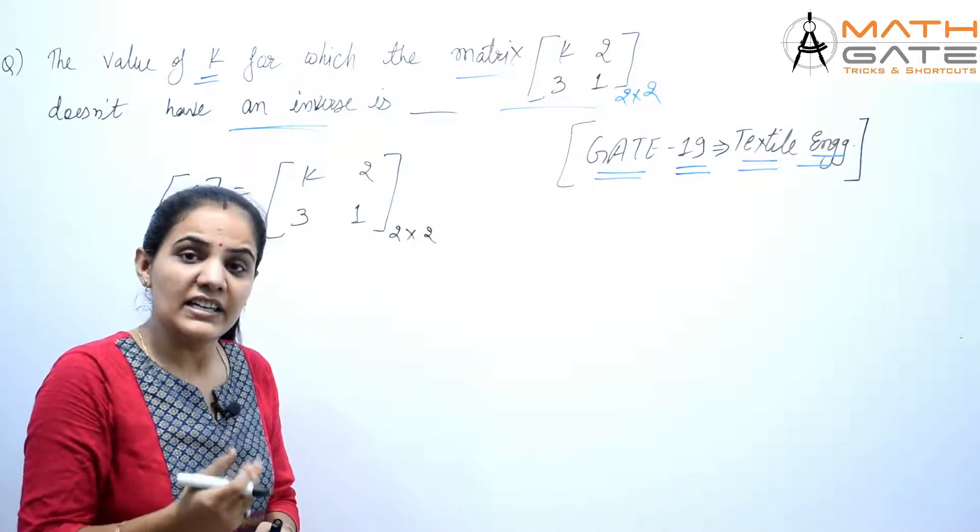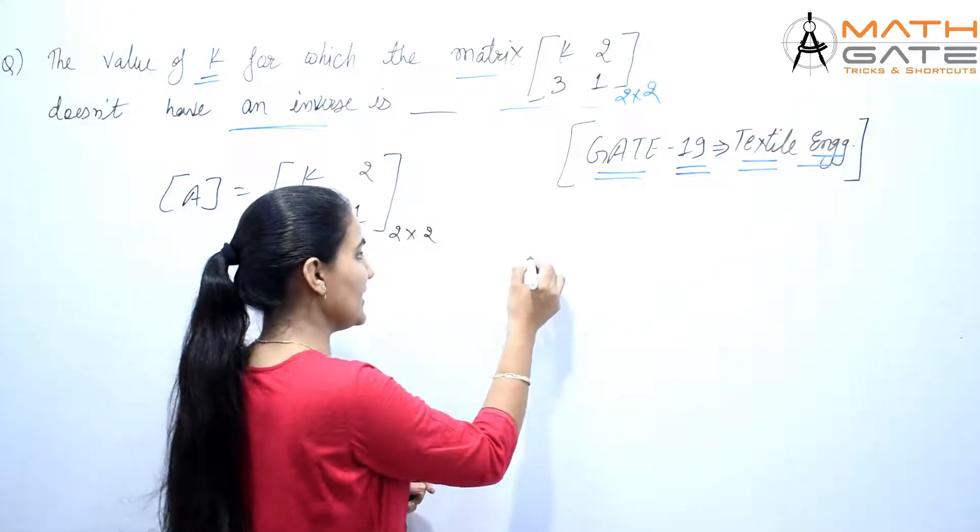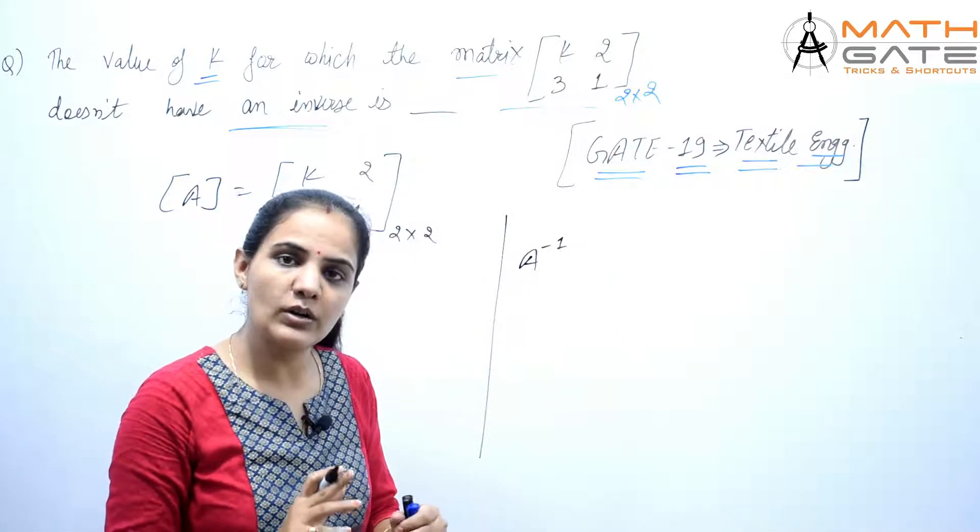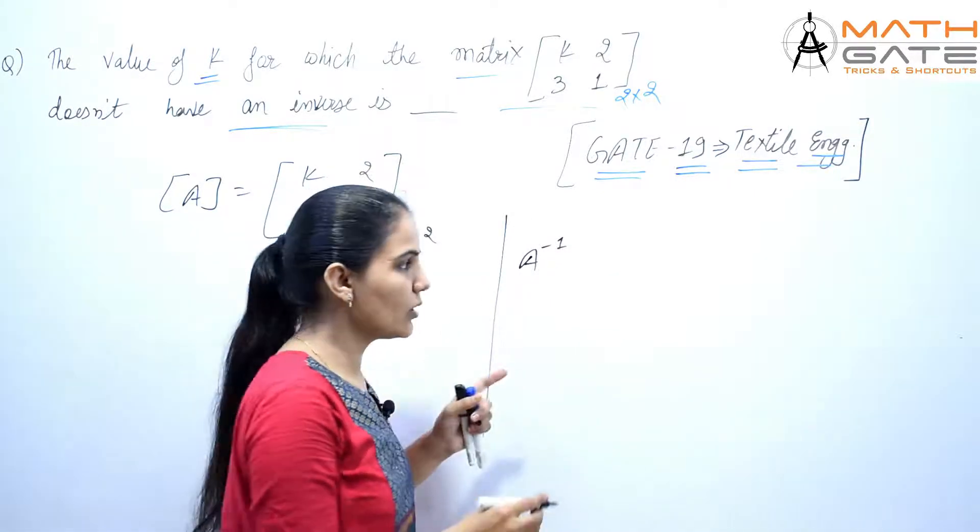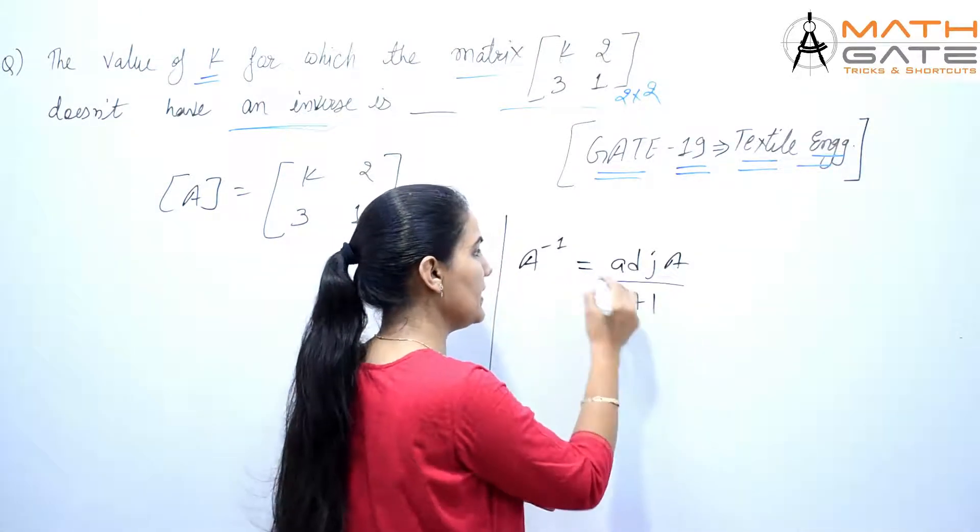First, let's discuss the inverse of a matrix. If we have a matrix A of order n×n, the inverse of this n×n matrix is A⁻¹ = adj(A)/|A|, where |A| is the determinant of A.